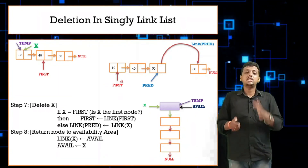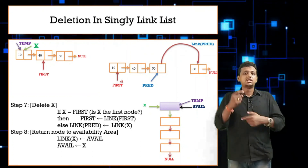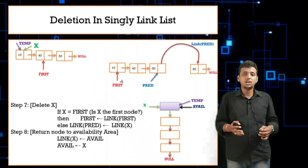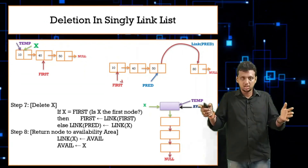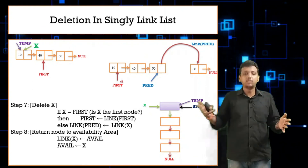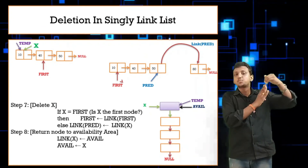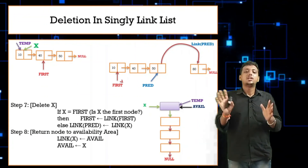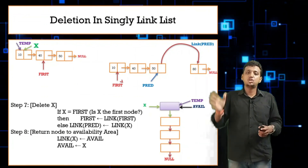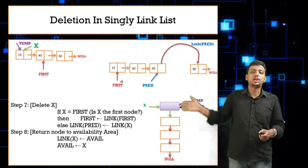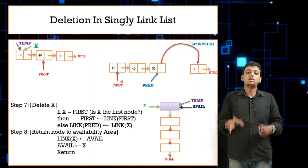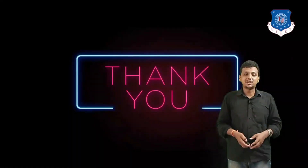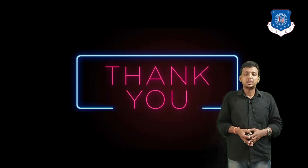To summarize today's lecture: we saw how to delete a node from a singly linked list. The conditions are — first, check underflow; second, if the node to delete is not found; third, if x equals first, then set first = link of first; and fourth, else set link of predecessor = link of x. Finally, free the node back to the availability stack. That's it for today's lecture — if you have any doubts, please feel free to ask. Thank you.